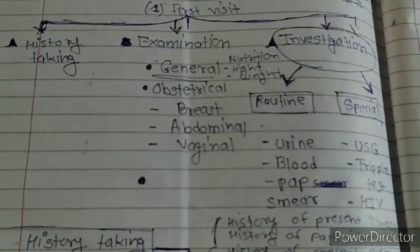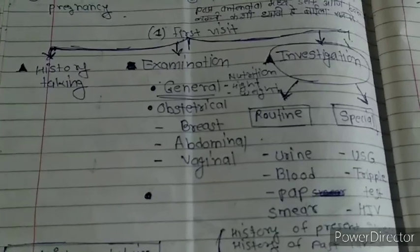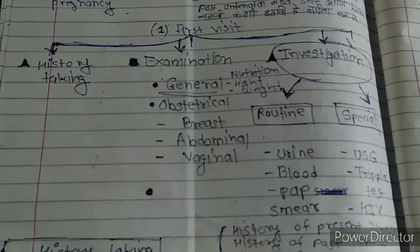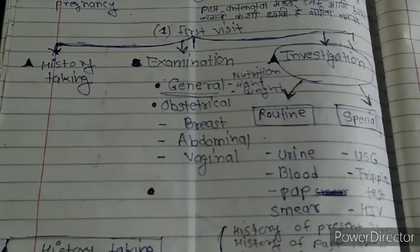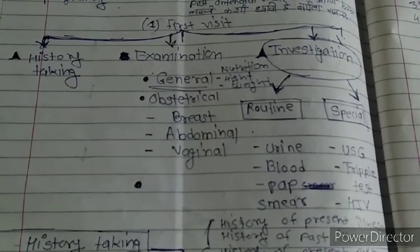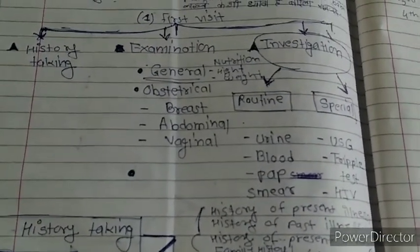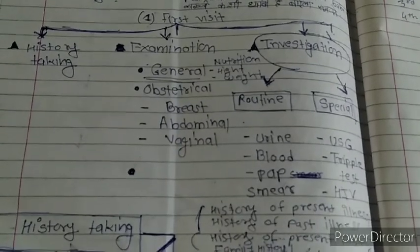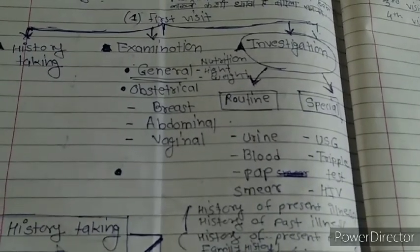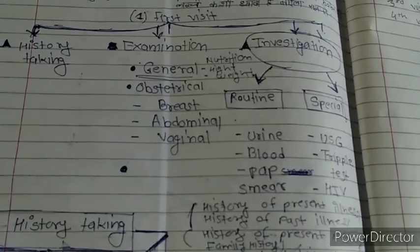Upon examination at the first visit, a general examination is made including nutrition, height and weight. An obstetrical examination includes breast examination, abdominal examination, and vaginal examination. Investigations include routine examinations such as urine, blood tests, pap smear, and special investigations such as ultrasound, triple test, and HIV test.